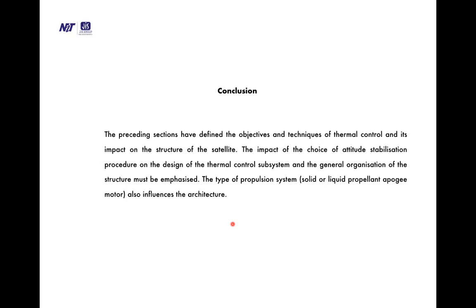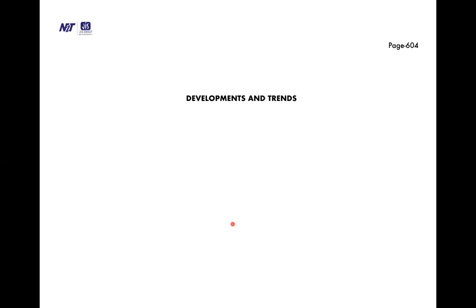To conclude this session, we have covered: observations and techniques of thermal control and its impact on satellite structure; the impact of attitude stabilization procedure choice on thermal control subsystem design; and the general organization of the satellite structure. The type of propulsion system also influences the architecture. The problems are very different for a spin-stabilized satellite versus a 3-axis stabilized satellite. Rotation of the spin-stabilized satellite ensures uniform exposure conditions for lateral faces to various radiation sources, which is not the case for 3-axis stabilized satellites.